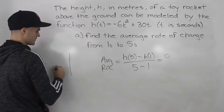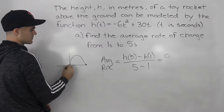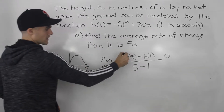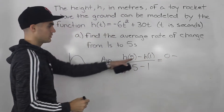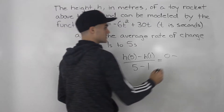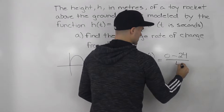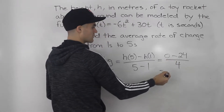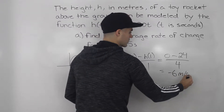If you actually graph this out, it's going to start at a height of zero — that's one of the intercepts — and then it's going to hit the ground at time five. So that's why h(5) is zero. Then we subtract h(1). If we plug in one for t, we get an h value of 24. And five minus one is simply four. So negative 24 divided by four gives us negative six meters per second.